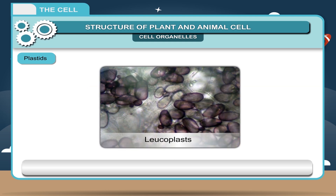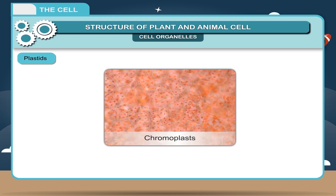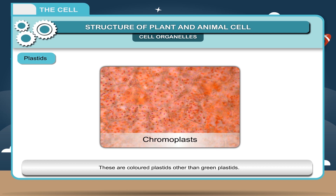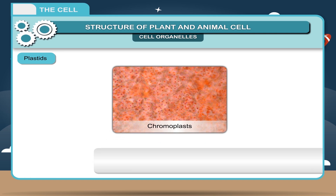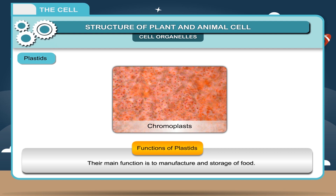Leukoplasts are colorless plastids found in the storage organs, for example potato and onion. Chromoplasts are colored plastids other than green plastids. The color of flowers and fruits are due to chromoplast. The main function of plastids is the manufacture and storage of food.